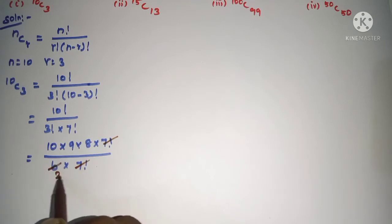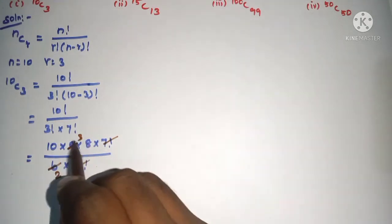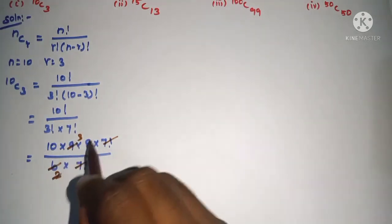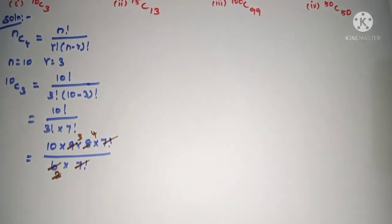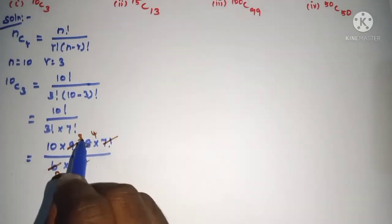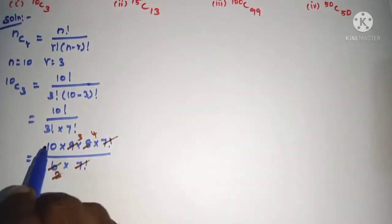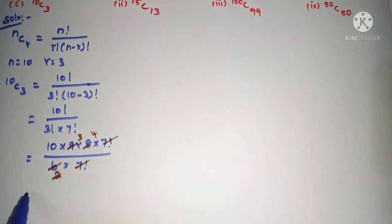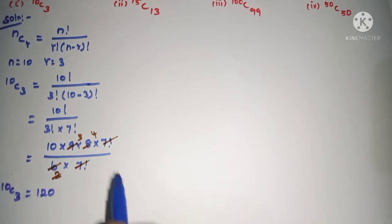3 factorial cancels: 2 times here, 3 times here, so 1 times here, 4 times here. So 3 factorial is 6, and 6 into 10 divided gives us 120. This is the 10C3 value.